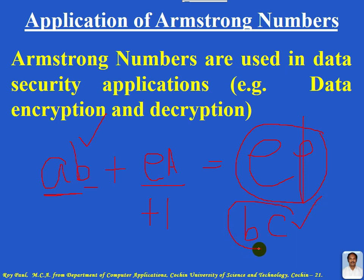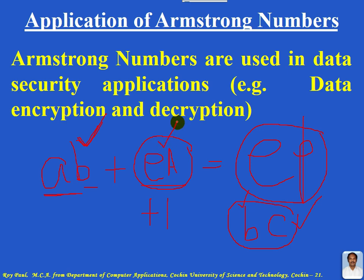This encrypted password is saved in the file so that even if someone opens the file, they will get only the encrypted password, not the actual password. In order to get the actual password, they should know about the encryption algorithm. In real life, the encryption algorithm is a complicated algorithm with billions of statements, so it is not easy to decode. A hacker will not be able to get the actual password because the encryption algorithm is a powerful, strong one.